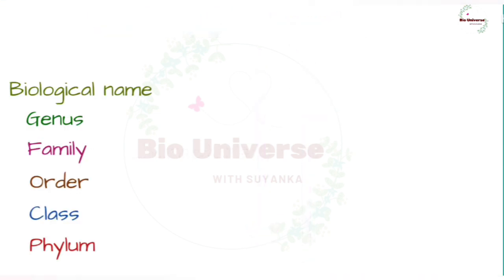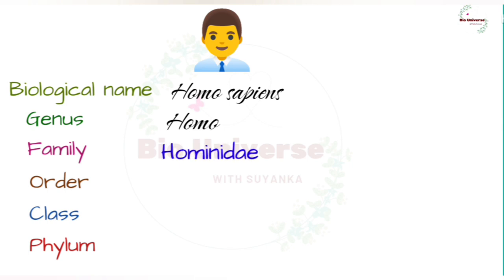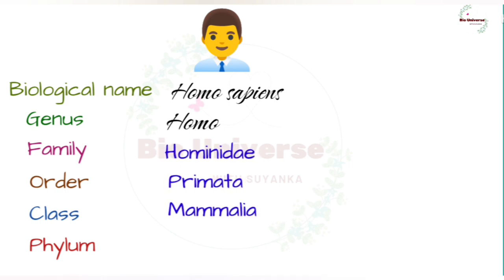Let's see the taxonomic categories of some common organisms. The biological name of man is Homo sapiens, and it belongs to genus Homo, family Hominidae, order Primata, class Mammalia, and phylum Chordata.